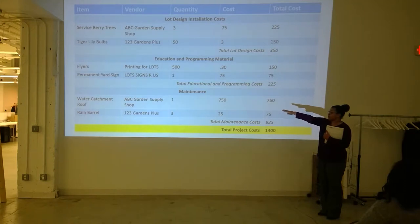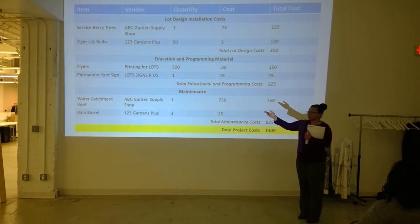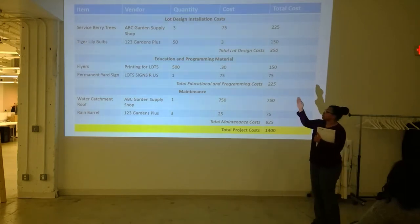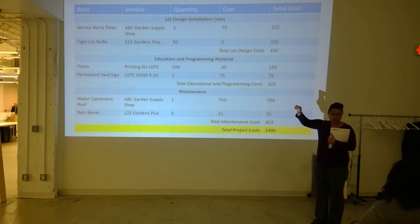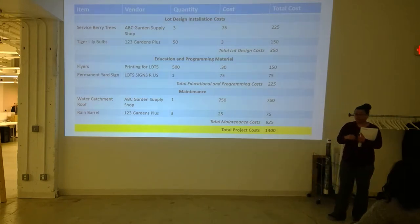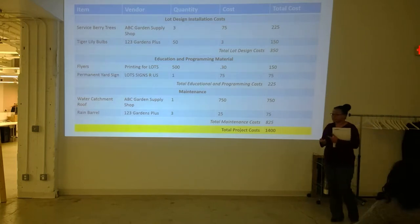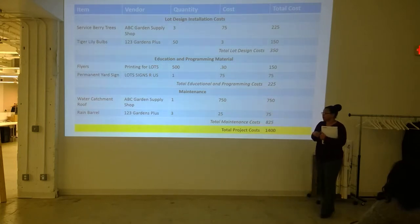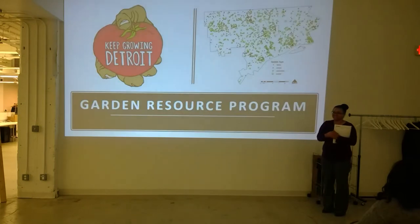And then, what are your current plans for maintenance? A really great question came up recently around whether a water catchment system would really be considered maintenance or installation. It is in your best interest to place water catchment systems in the maintenance section. Because even if your initial budget doesn't show it, lot installation is expensive — you have site prep, installation equipment, volunteers that are going to help out. It starts to add up. Maintenance costs, and obviously a water catchment system is a maintenance item anyway, because it's going to help you keep your garden healthy and alive.